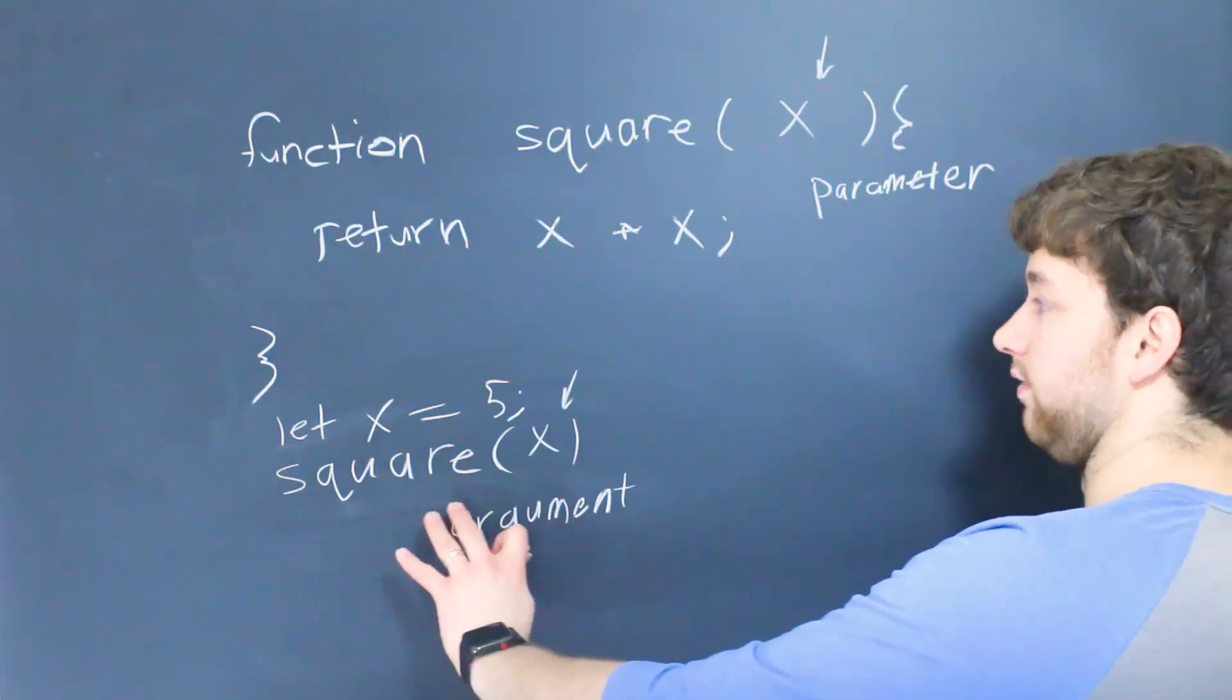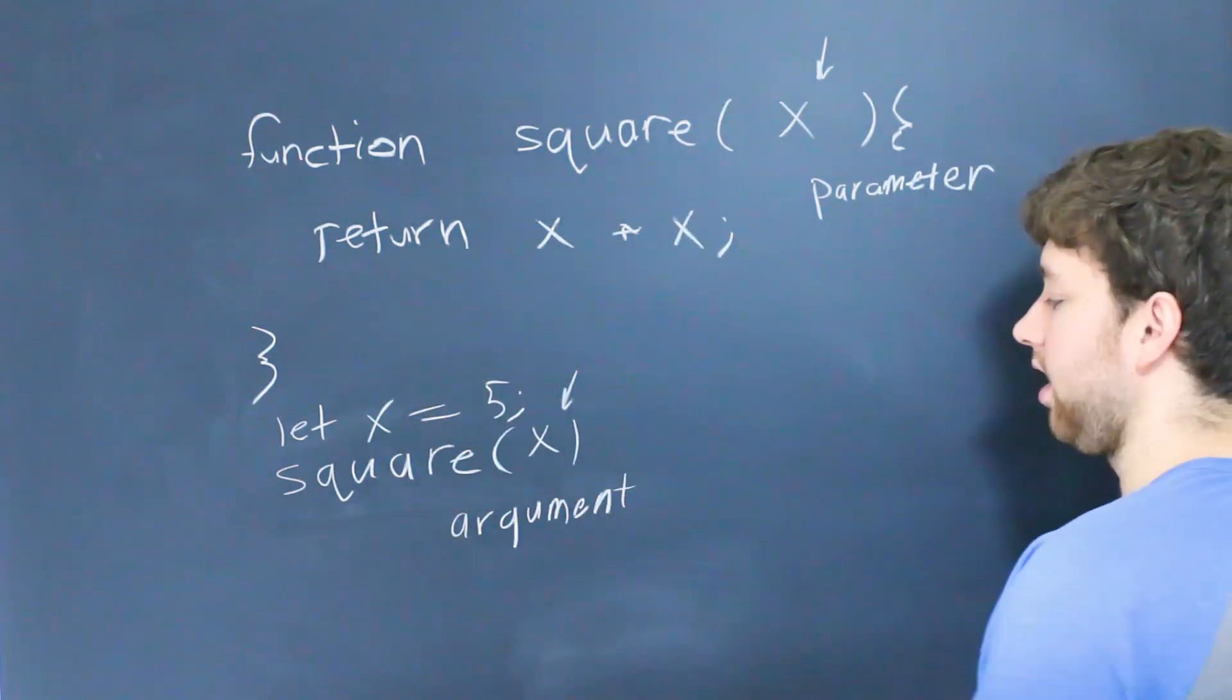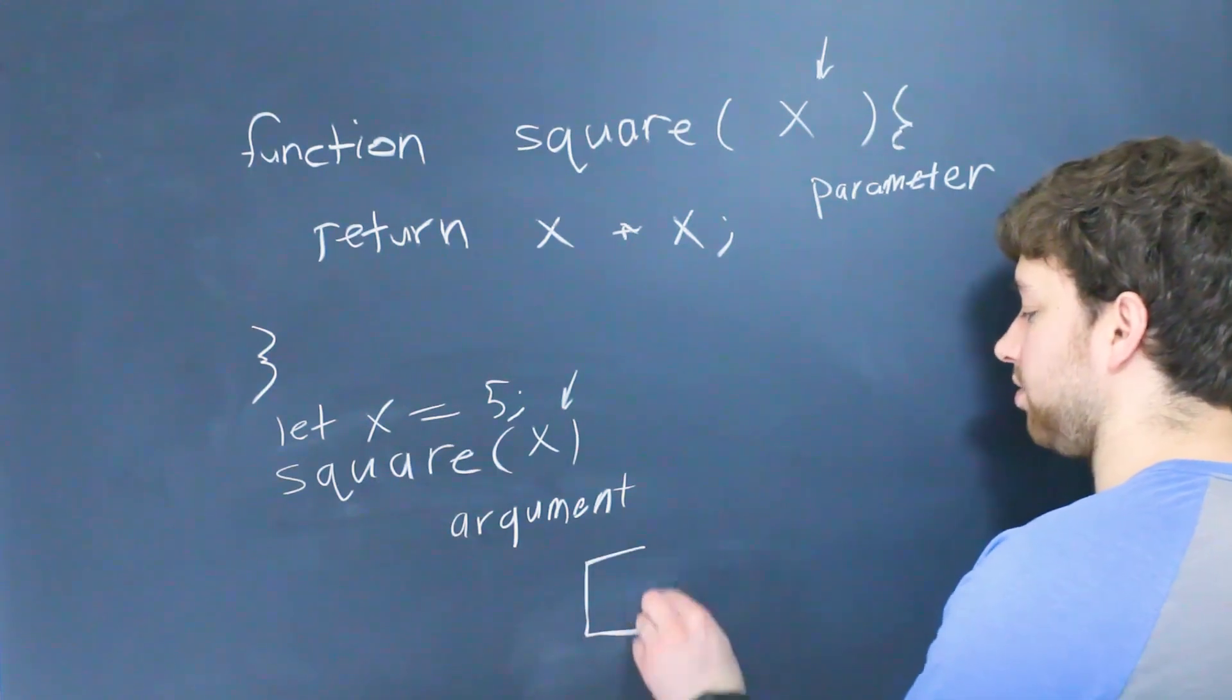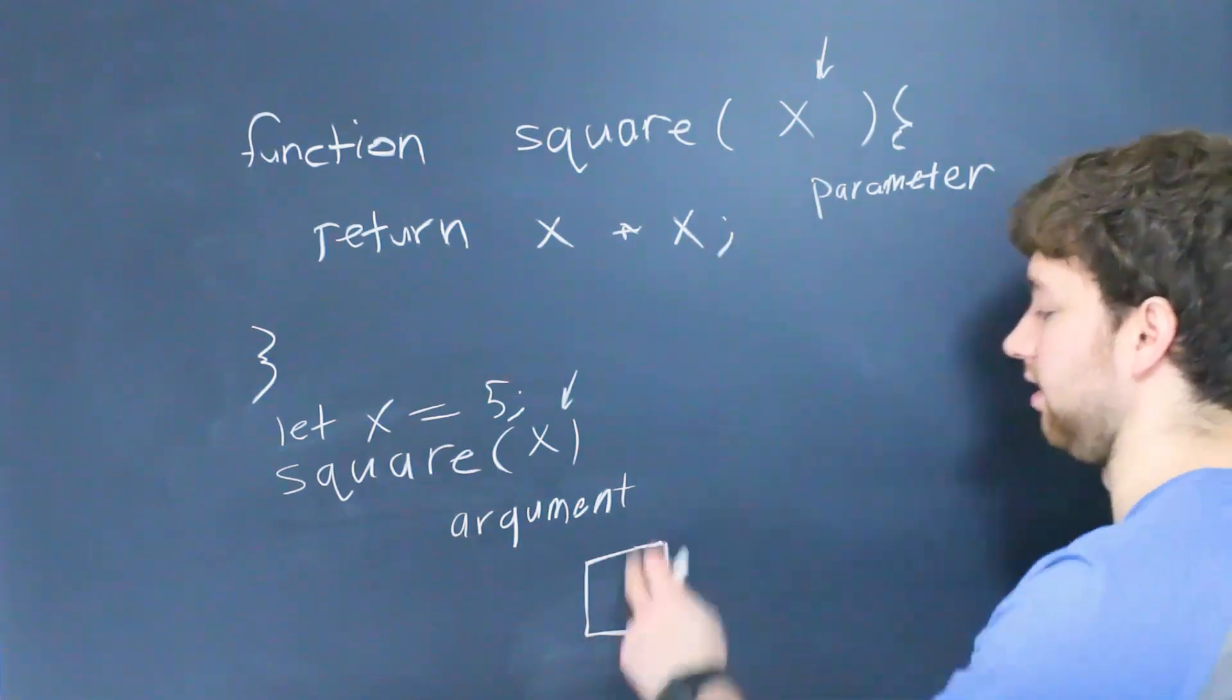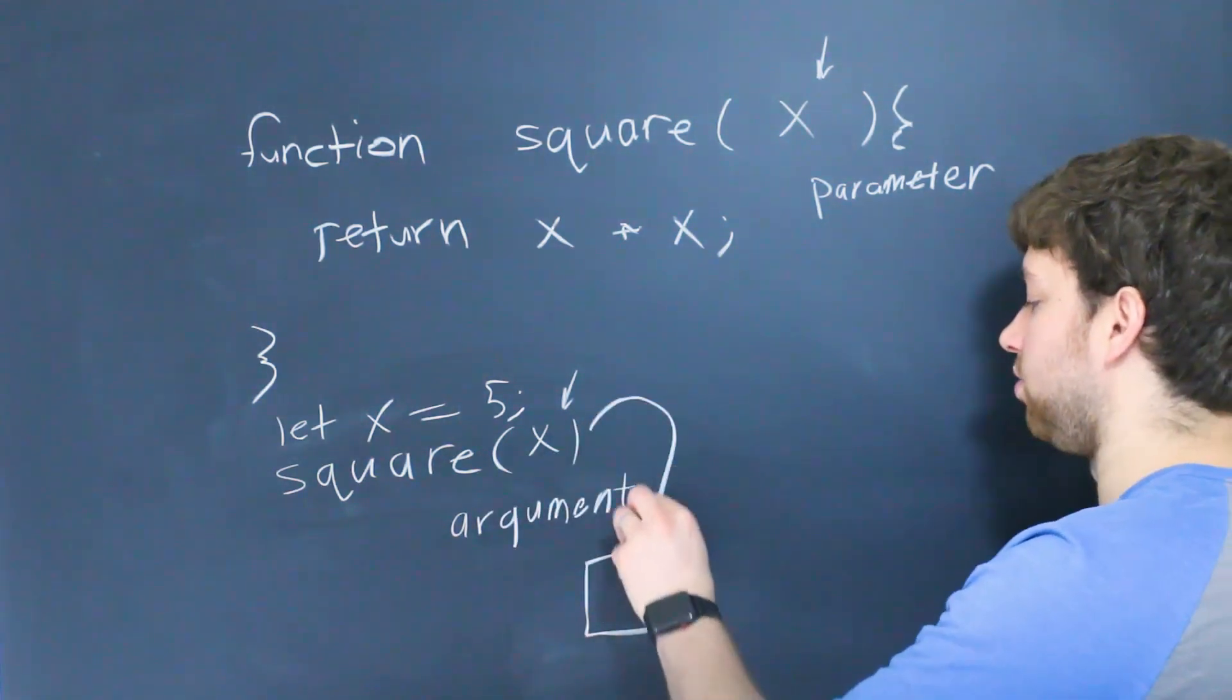So argument is when we're calling the function. Parameter is inside the function declaration. So you can kind of think of it like this. We have parameters which can contain values. So we have basically a variable, and the arguments get passed in to those parameters, whatever value is in that variable.